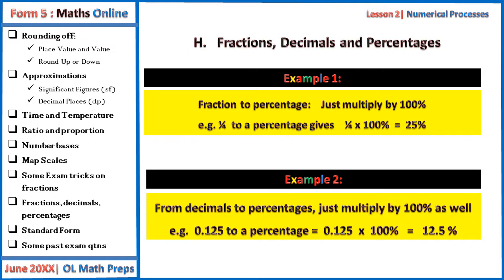Similarly, to convert from decimals to percentages, we just multiply by 100% as well. For example, 0.125 should be equal to 0.125 times 100%, which gives us 12.5%.